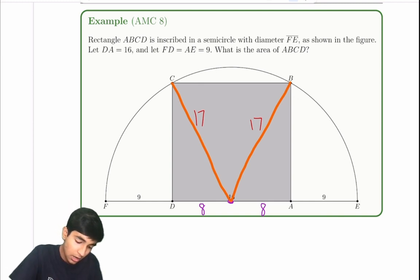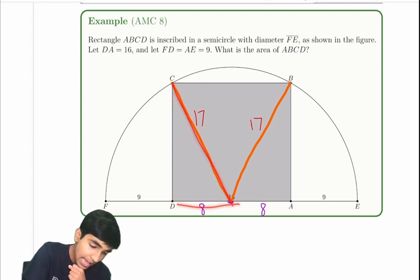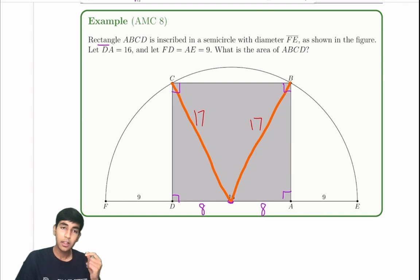We know that this is 16. So we need to somehow find the height of this rectangle. And I see a 17, I see an 8. And because this is a rectangle, we've got 90 degree angles here, here, here, and here. 8, 15, 17 triangles. That's a Pythagorean triple right there.